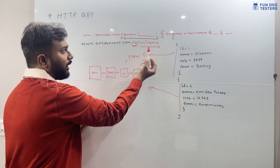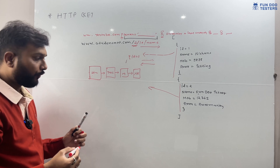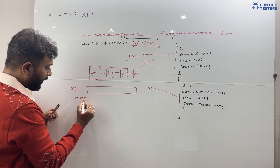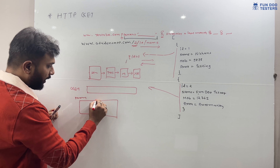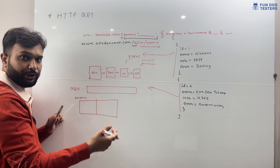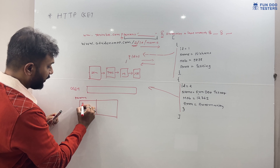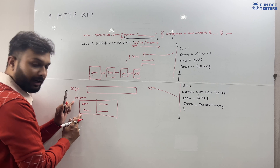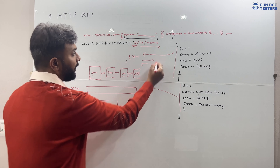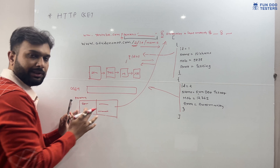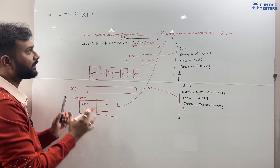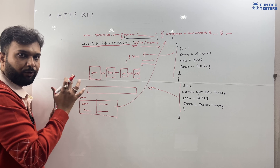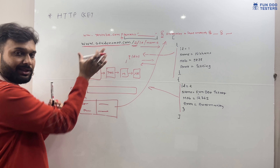In Postman, we pass a base URI and use the 'Params' section with key-value pairs. For example, key 'search' with your favorite song name, and key 'duration' with value 'last month'. Postman will automatically convert these into the proper query parameter format in the URL. This is the structure of a GET API and how it works.